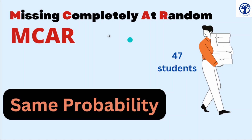In general, we will say that MCAR — missing completely at random — implies that the missingness of data is unrelated to any observed or unobserved data, or that the probability of a value being missing is the same for all observations.